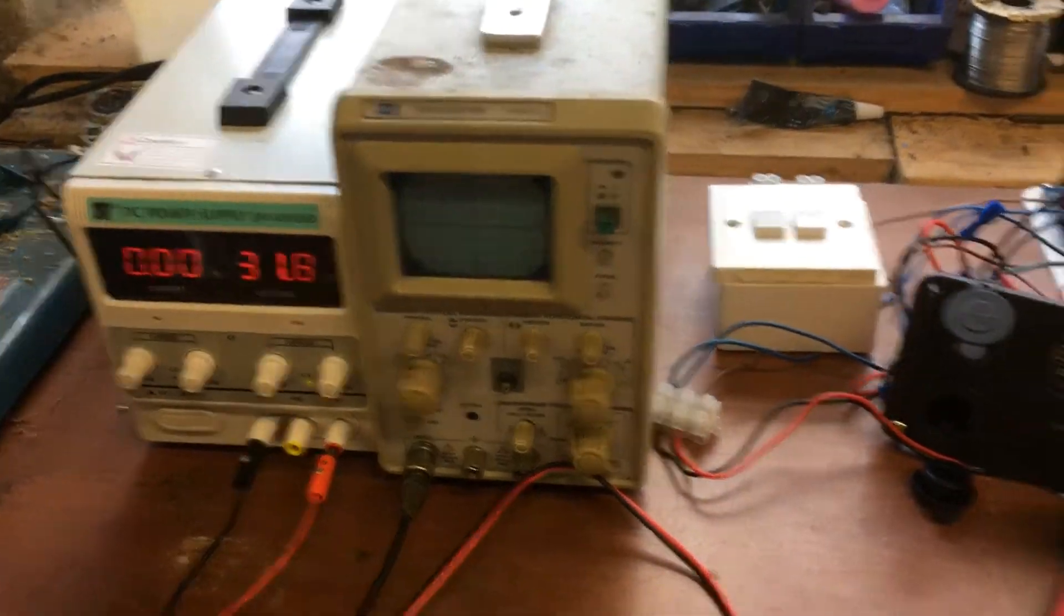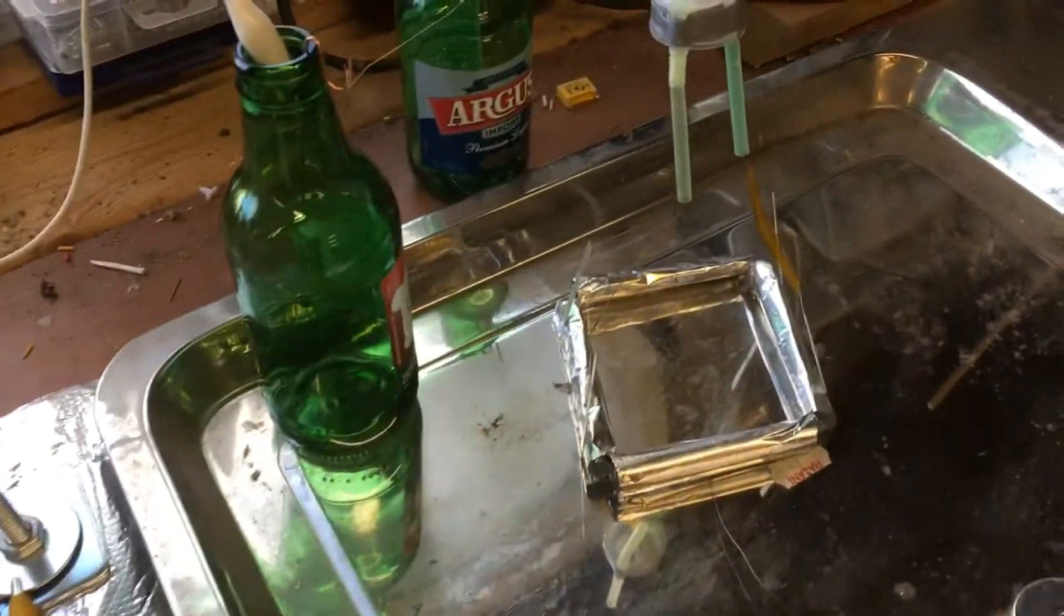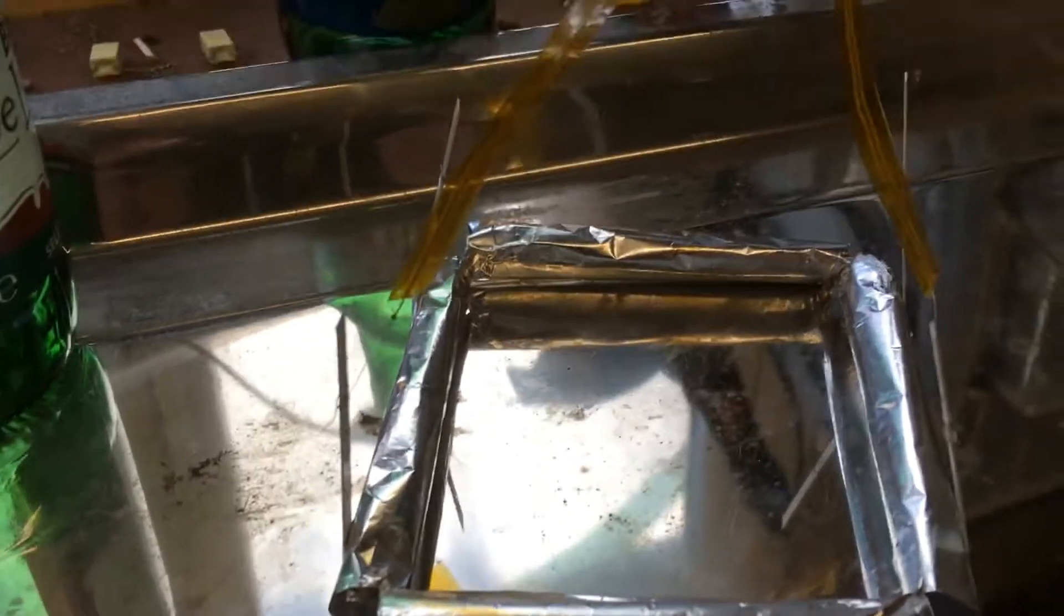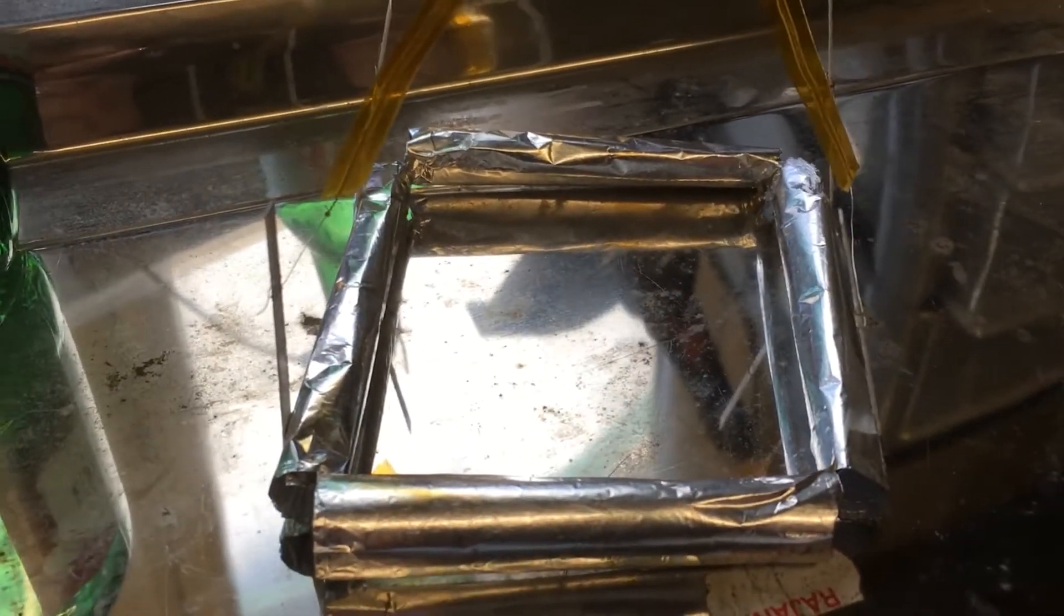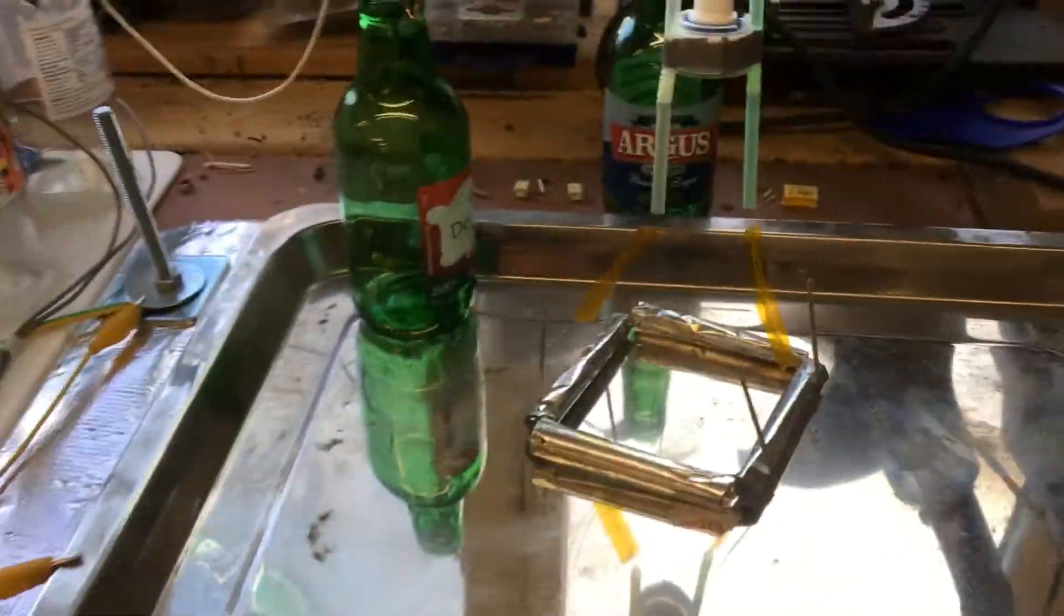This video is a demonstration of simple switched two degree of freedom control over a square lifter. This is a square lifter but it doesn't have a single corona wire. Basically there's two corona wires on two sides of the lifter, one here and one here, and those are arranged in a T-shape.